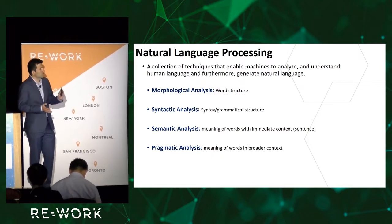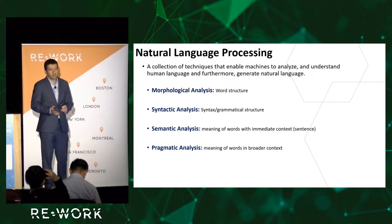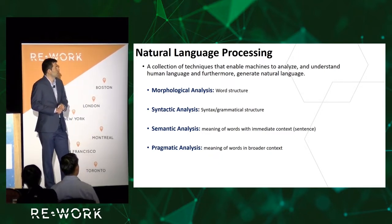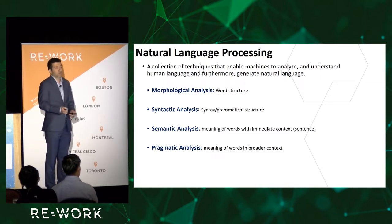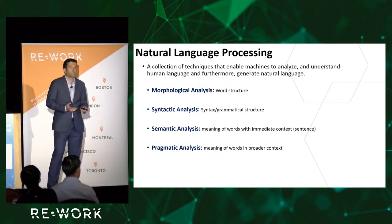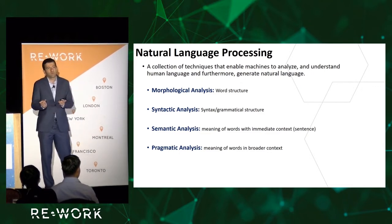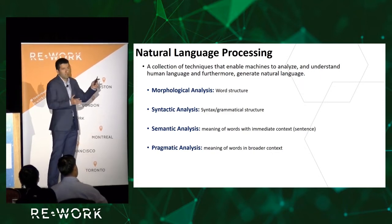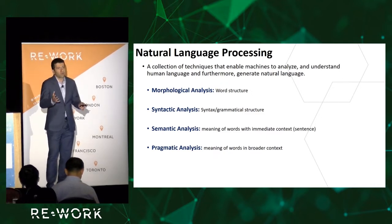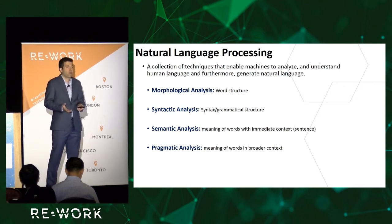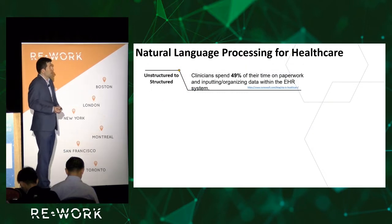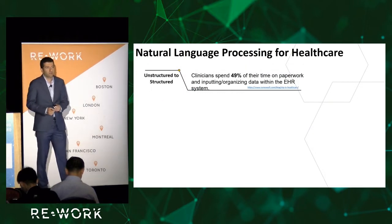You can categorize NLP under four levels. The first is morphological analysis — dealing with word structure, like making adverbs and adjectives out of a base word. The next level is syntactic analysis, which is the grammar of the language. A bit more advanced is semantic analysis, where you're trying to take into account the meaning of words within the immediate context, such as the sentence. The hardest is pragmatic analysis — the meaning of words within the broader context of a paragraph or whole page.